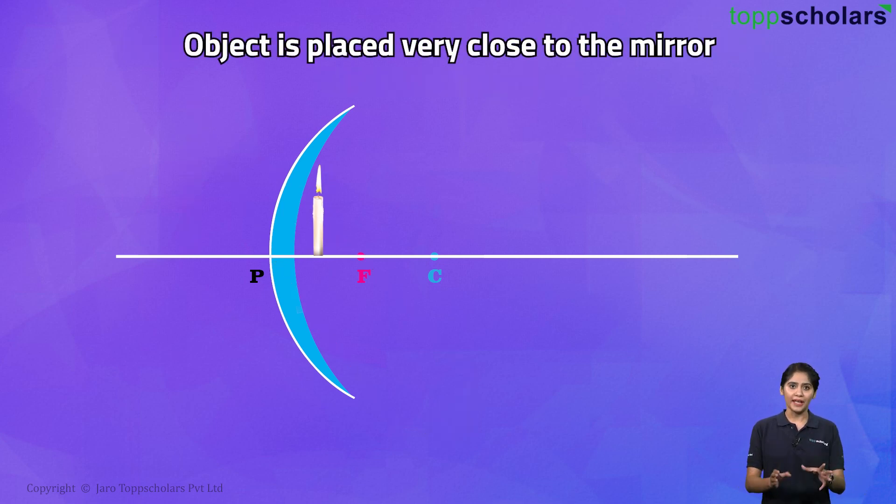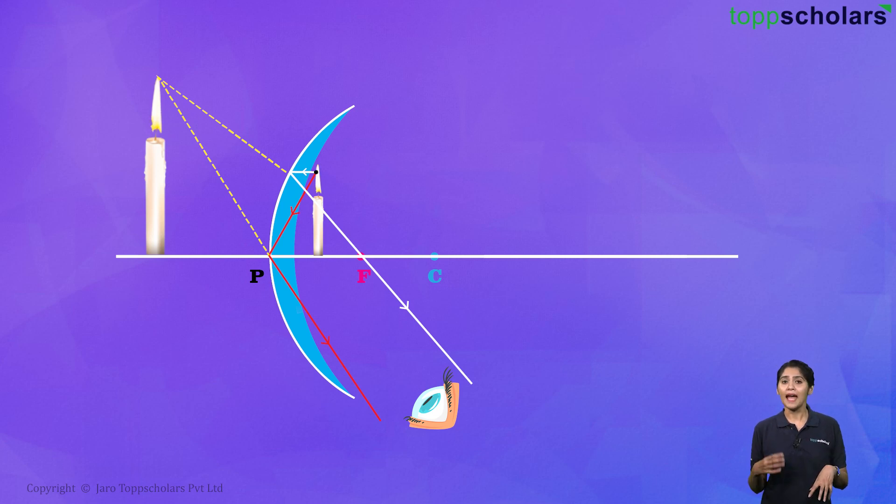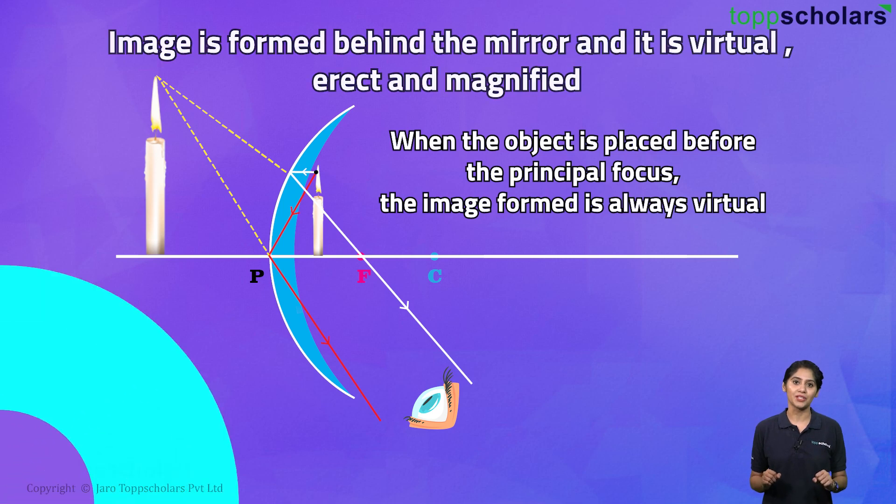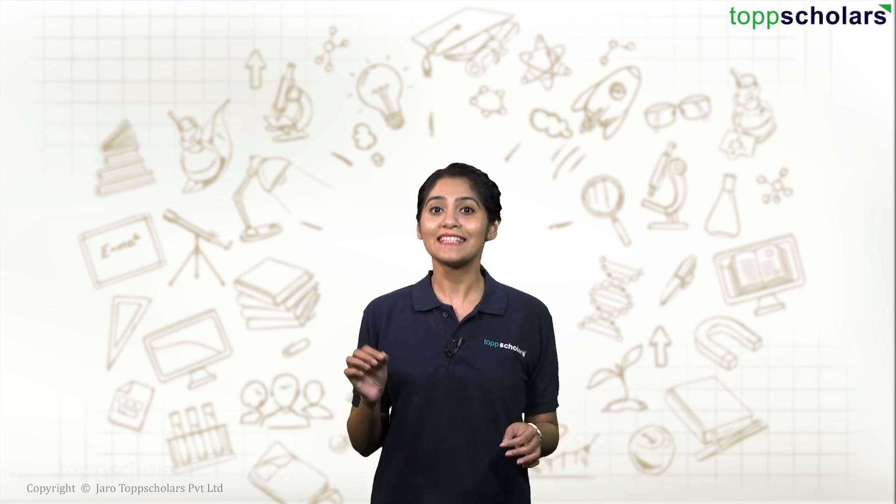Now we bring the object very close to the mirror inside the principal focus. And as a result, we can see a giant erect and virtual image. So concave mirrors can produce magnified virtual images. And this is why they are used as shaving mirrors, makeup mirrors, etc.